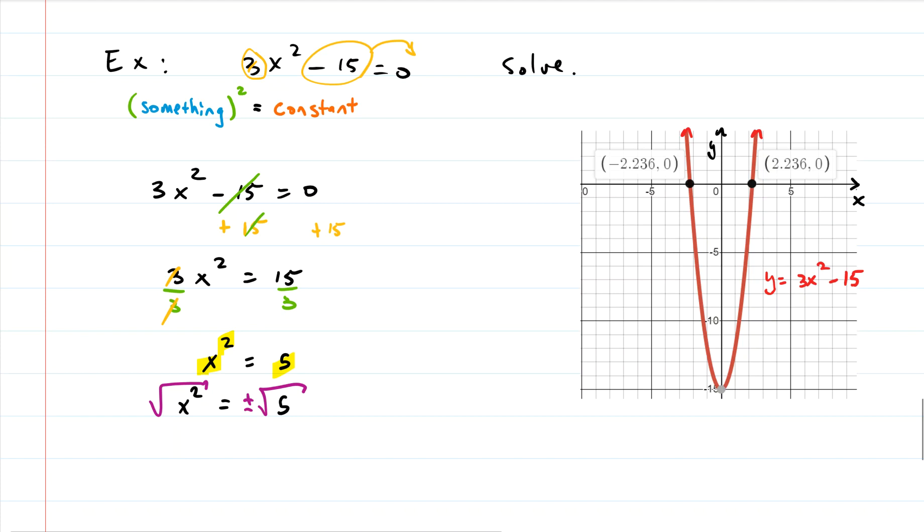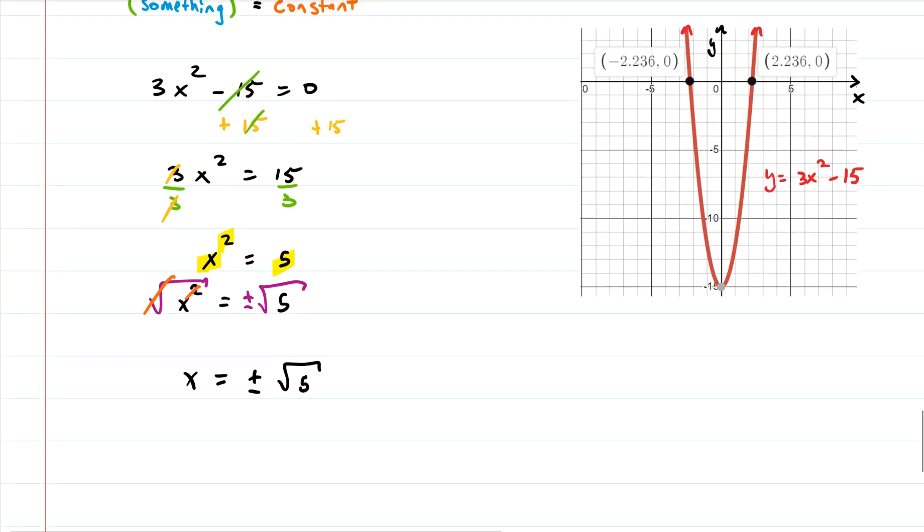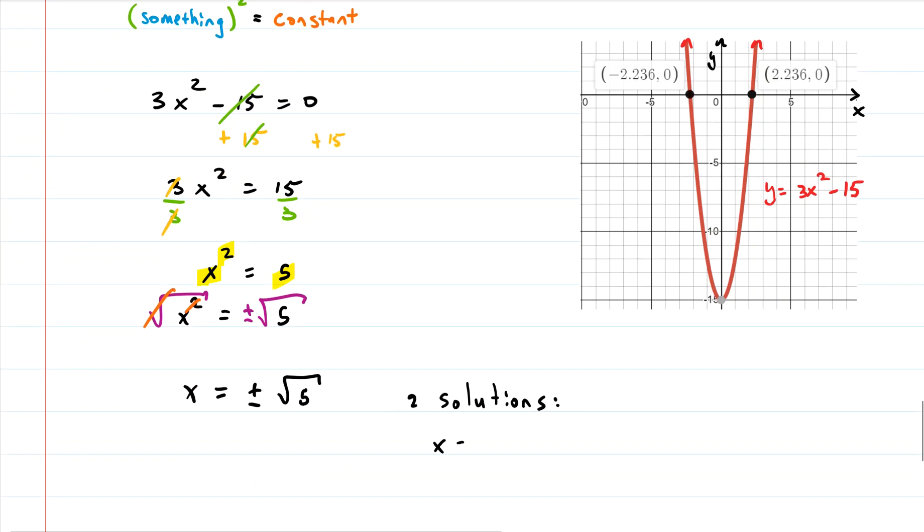Now we have some canceling here. The square root and the square cancel, and we're left with x equals plus or minus root 5. So that means we actually have two solutions, right?